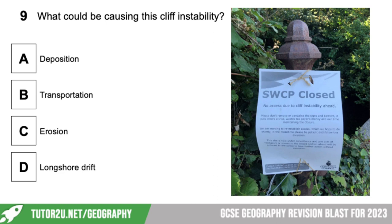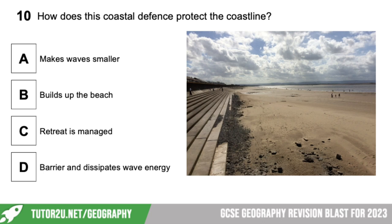Nine: what could be causing this cliff instability? Is it deposition, transportation, erosion, or longshore drift? It is erosion, which will cause undercutting at the bottom, meaning the rest of the cliff is unstable with nothing holding it up. Number ten: how does this coastal defence protect the coastline? The options are: it makes waves smaller; it builds up the beach; retreat is managed; it's a barrier; or it dissipates wave energy. The answer is D — it dissipates wave energy.